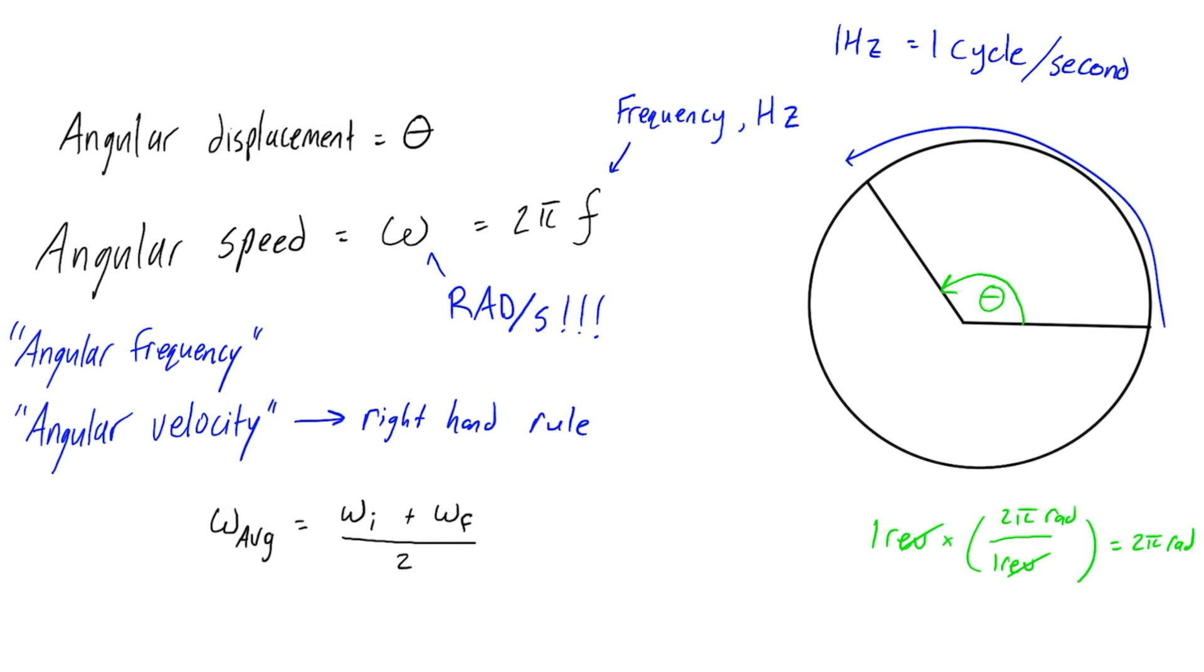And then the other two equations that omega is going to pop up very obviously in. We have omega f, so the final angular speed, is equal to the initial plus alpha t, alpha being the angular acceleration. And this other one, we have omega f squared is equal to omega i squared plus 2 alpha theta.